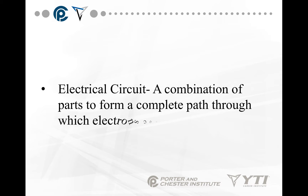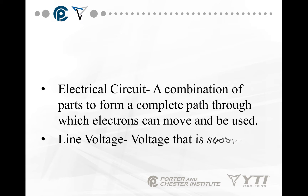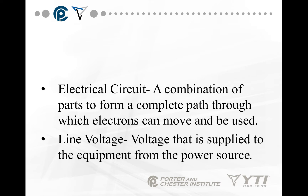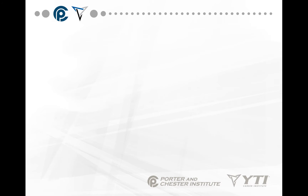Electrical circuits are combinations of parts to form a complete path through which electrons can be moved and used. Line voltage is the voltage that's supplied to a piece of equipment from the power source. You've got to be careful — line voltage is not always 120 volts. It could be 240, 480, or 230. It's all dependent on what that piece of equipment is connected to.